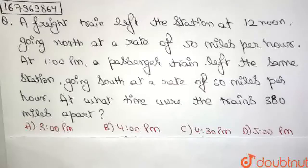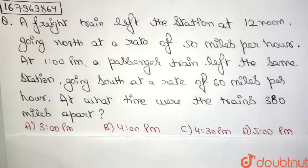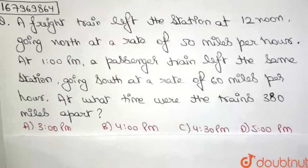Hello friends, welcome. The question states, A freight train left the station at 12 noon, going north at a rate of 50 miles per hour. At 1pm, a passenger train left the same station, going south at a rate of 60 miles per hour. At what time were the trains 380 miles apart? And then we have 4 relevant options to this particular question.